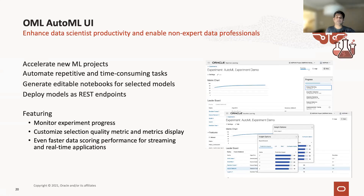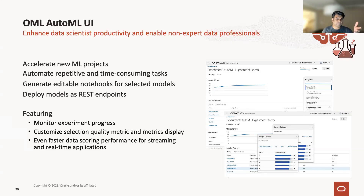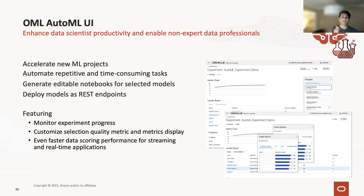You say, 'Here's the data, here are the algorithms, find the best combination, figure out which columns are interesting.' It will automatically do attribute importance, find the important columns, run against the algorithms, build different models, and tell you the scores. You just run this, grab your coffee, come back after a while, and it's completed. You can say, 'This model looks good,' click and deploy it. Once the model gets deployed, people using the model will tell you whether it's working. If not, you can quickly deploy the older model and repeat the experiment, or go back and see why this particular model didn't perform as expected. The entire end-to-end step of creation, management, deployment, and rollback is completely automated using the AutoML UI.